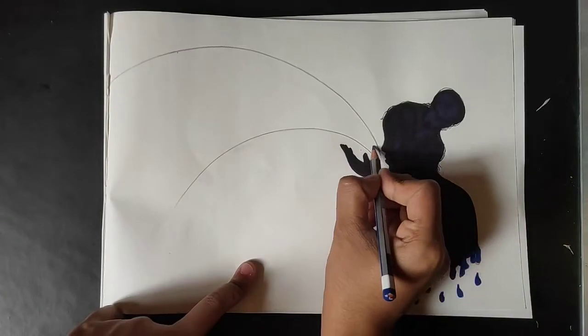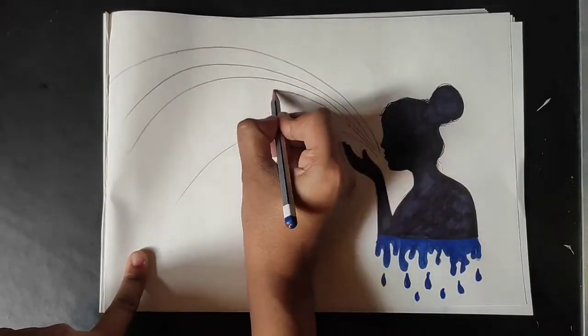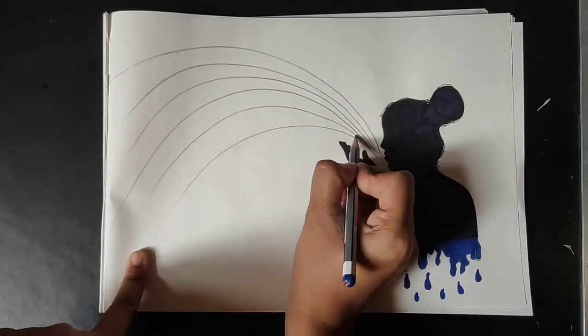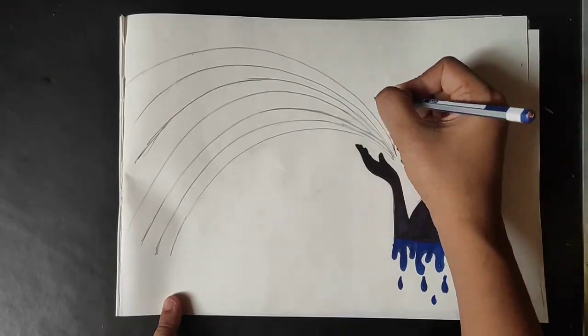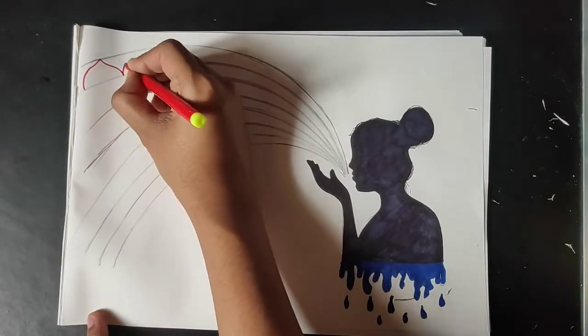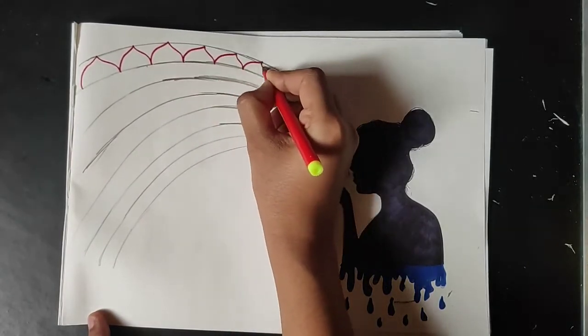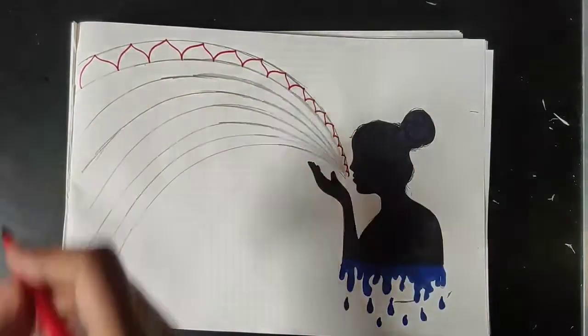Now here we have to draw curve lines, total seven curve lines we have to do for rainbow. Now first we have to start with red color. You can do any pattern and continue like this.